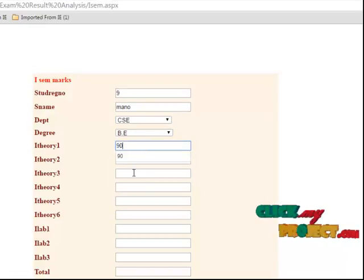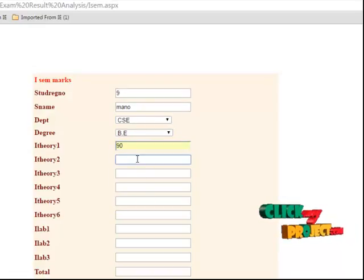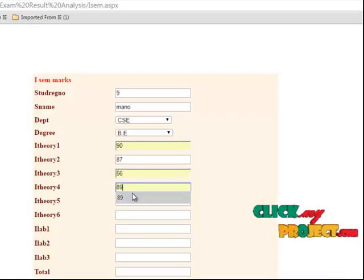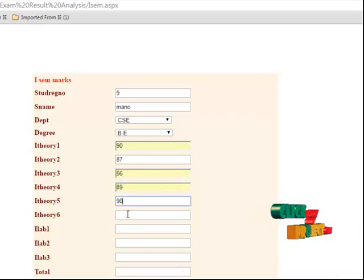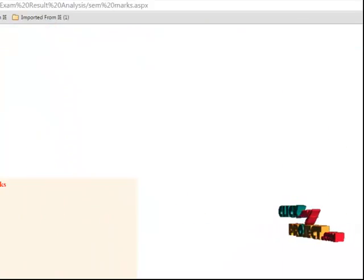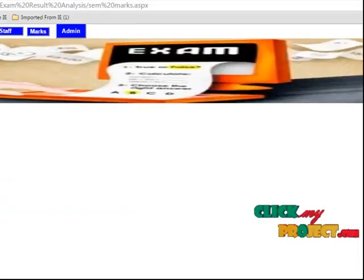Then marks to put the theory one mark, then theory two, theory three. Ninety, then ninety eight. Also to submit the button to display the total and average and it is registered into the database. Then another process is finally last sem.